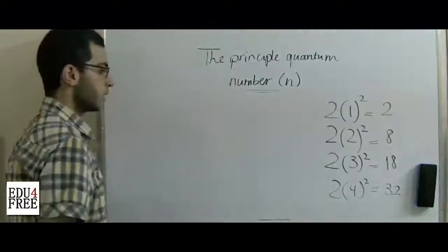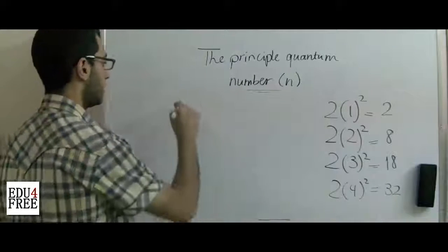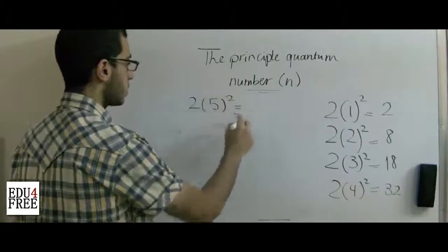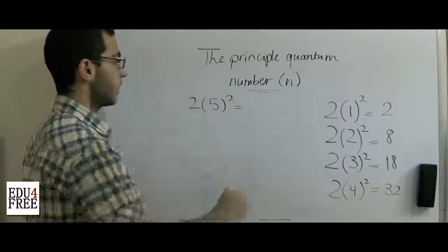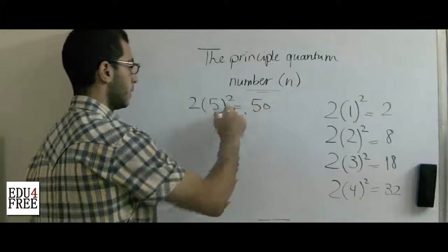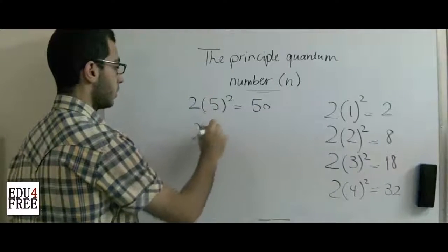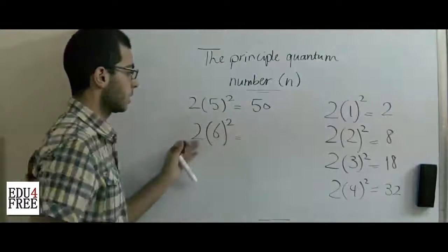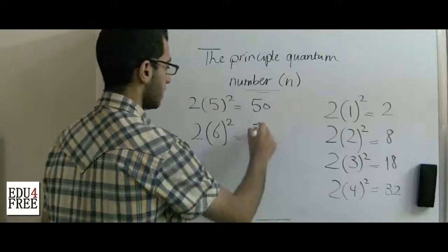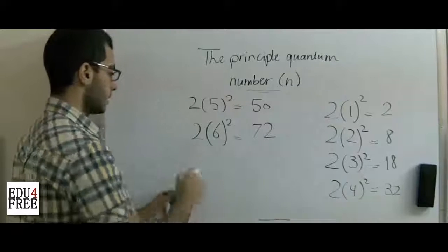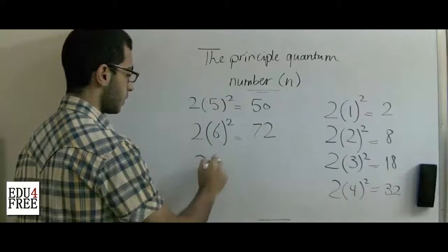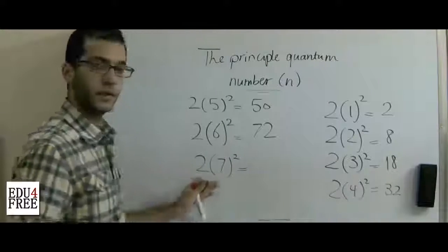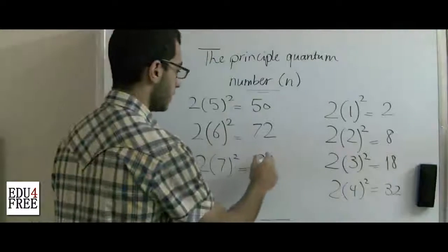The fifth energy level: 2 multiplied by 5 squared is 2 times 25, giving 50. The sixth: 2 multiplied by 6 squared is 2 times 36, giving 72. The seventh: 2 multiplied by 7 squared is 2 times 49, giving 98.